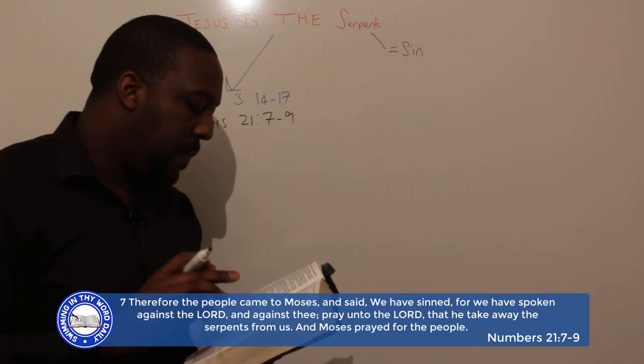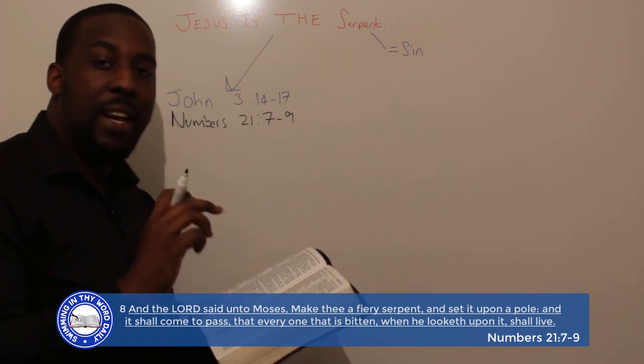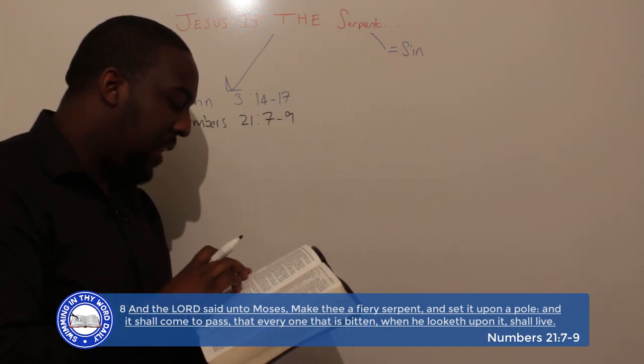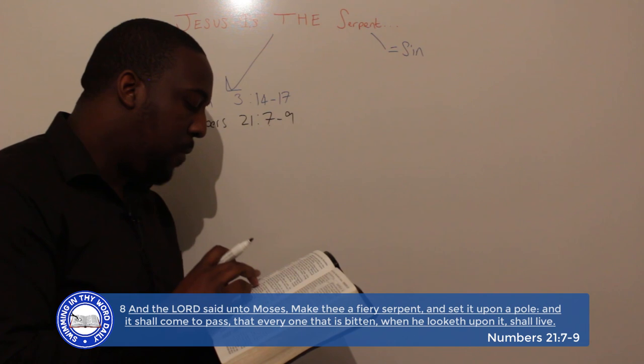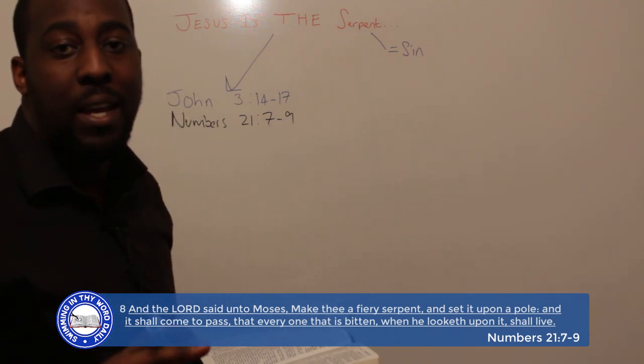Now look at this, verse 8: 'And the Lord said unto Moses, Make thee a fiery serpent and set it upon a pole, and it shall come to pass that everyone that is bitten, when he looketh upon it, shall live.' So the Lord says to Moses, make a fiery serpent, put it on a pole and lift it up, and everyone that looks unto that serpent will be saved, shall live.